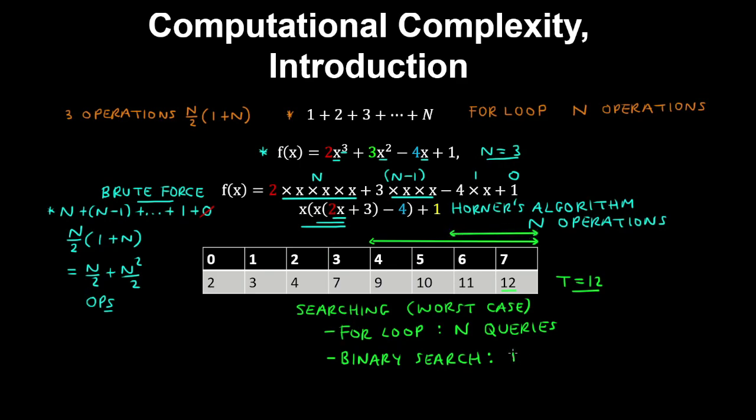In the first iteration, we have a list of n numbers. After the next iteration, we have a list of n on two numbers to compare against, then n on four, and so on. The binary search algorithm requires log n queries.